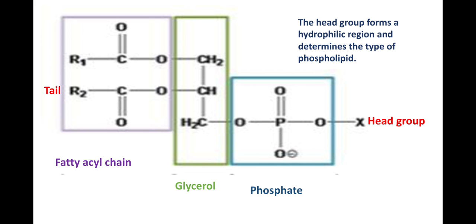Here, a phospholipid shows its head position and tail position. The head position has a phosphate group and a glycerol, while the fatty acid chain is the tail position. This head region forms a hydrophilic region and determines the type of phospholipid. So the head position determines the type of phospholipids — a phosphate group, glycerol, and fatty acid chains.